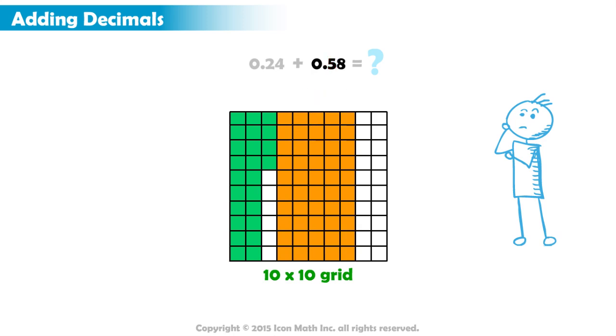How many hundredths are in 58 hundredths? There are 8 hundredths. Let's shade 8 more squares. We will shade the squares that help us to complete a full column when possible.